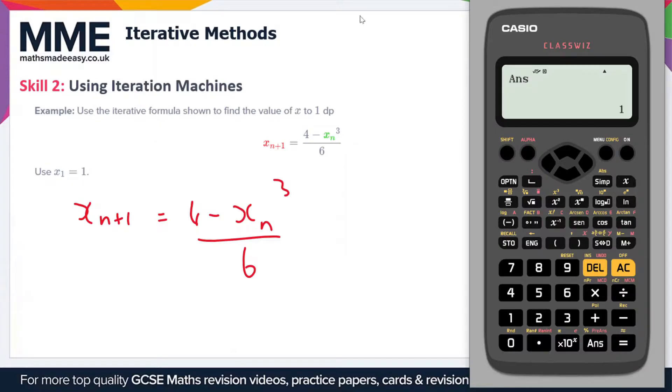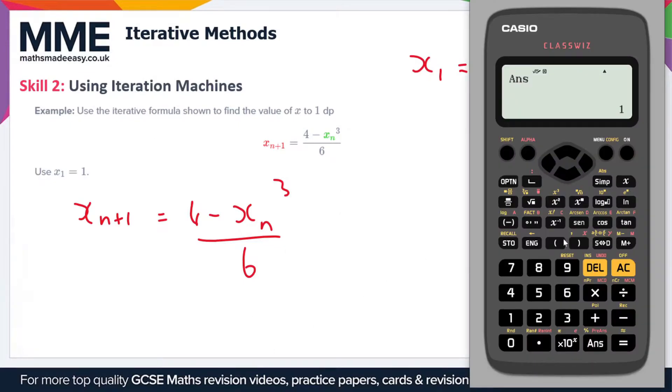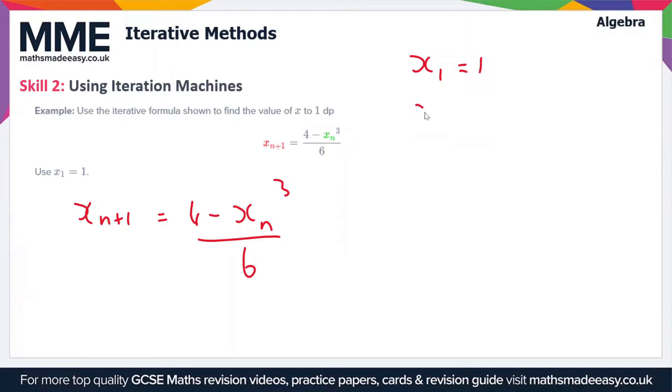Now I'm going to plug in the first value x1 which is equal to one and plug that value into our formula. I'm going to type out the formula, four minus, but I'm going to use the answer key here. We've got answer cubed and we're dividing that by six. If I press equals here we've got a value of a half, so x2 is equal to a half.